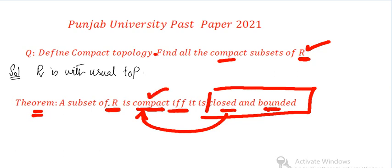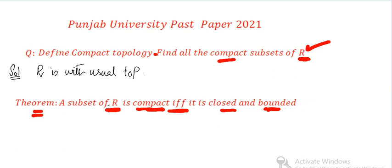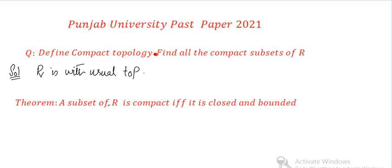What this means is that from R's infinitely many subsets, it is not possible to remove every subset and check. You have to categorize them. There is a restriction — you only need to consider those subsets which are both closed and bounded. Only those subsets can be compact.